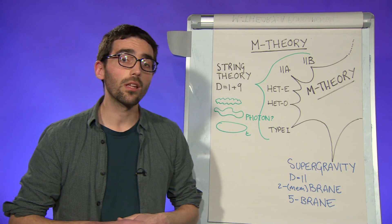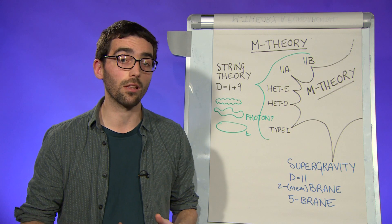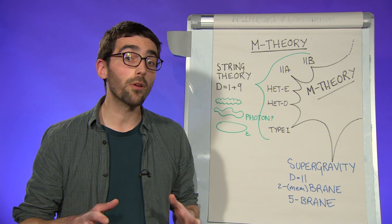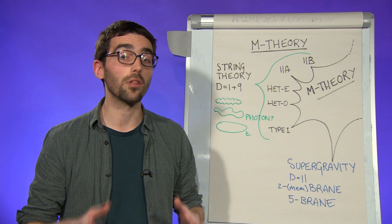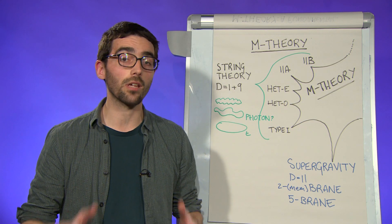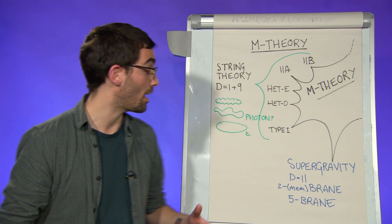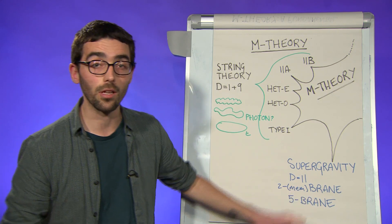Prior to these developments, a different strand of research was looking to a theory called supergravity for answers. Now, supergravity lives in eleven spacetime dimensions and contains not strings, but two-dimensional extended objects and five-dimensional extended objects, typically referred to as branes, as in a membrane, for example.